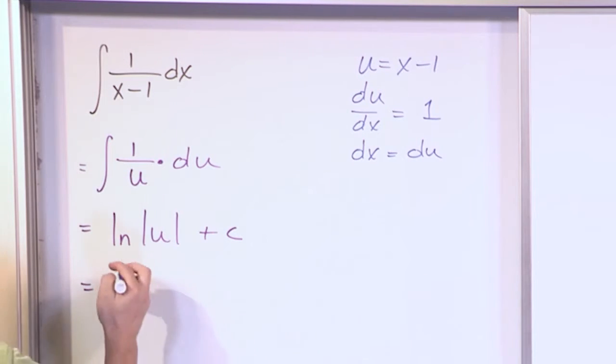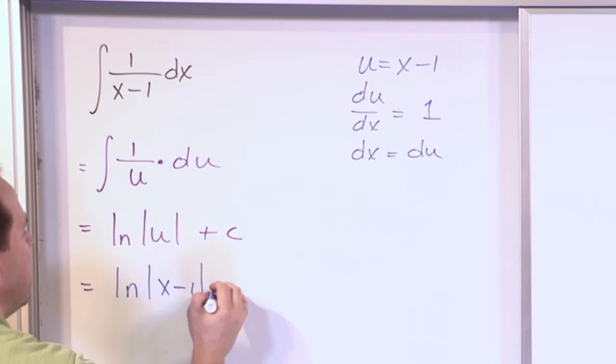But we don't want to circle that as our answer because we have to substitute in what we know u to be. u is x minus 1 plus a constant. So that's the final answer, natural log of x minus 1 plus a constant.